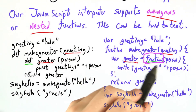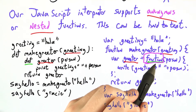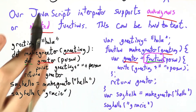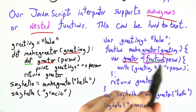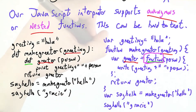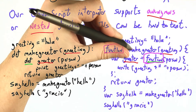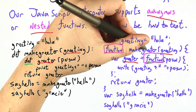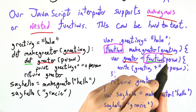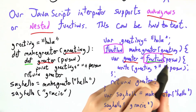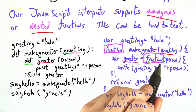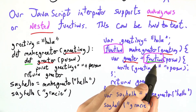In JavaScript you can use the word function to make a new function anywhere without really giving it a name, although we assigned it to the variable greeter almost immediately. You can use it at the top level to make a function with a name, or lower down where you just have function followed by the arguments with no name — this is sometimes called an anonymous function.